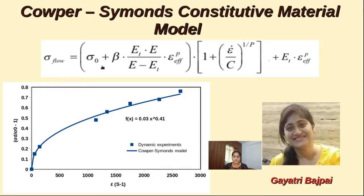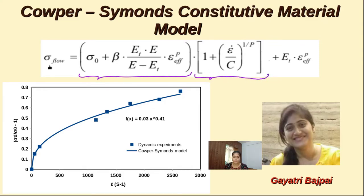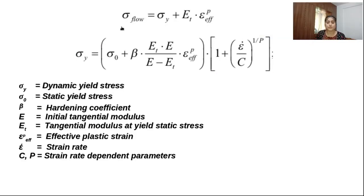This is called the Copper Cement Material Model. The first bracket term is the strain effect, the second bracket term is the strain rate effect. This complete expression is called flow stress, and these brackets are called dynamic yield stress. So one by one, we will see what these parameters are. This is flow stress and this is dynamic yield stress.